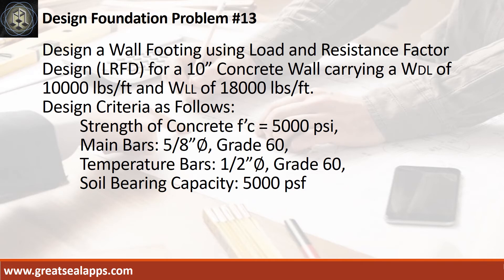Design a wall footing using load and resistance factor design for a 10-inch concrete wall carrying a uniform dead load of 10,000 pounds per foot and uniform live load of 18,000 pounds per foot. Design criteria: strength of concrete 5,000 PSI, main bars 5/8-inch diameter grade 60, temperature bars 1/2-inch diameter grade 60, soil bearing capacity 5,000 PSF.